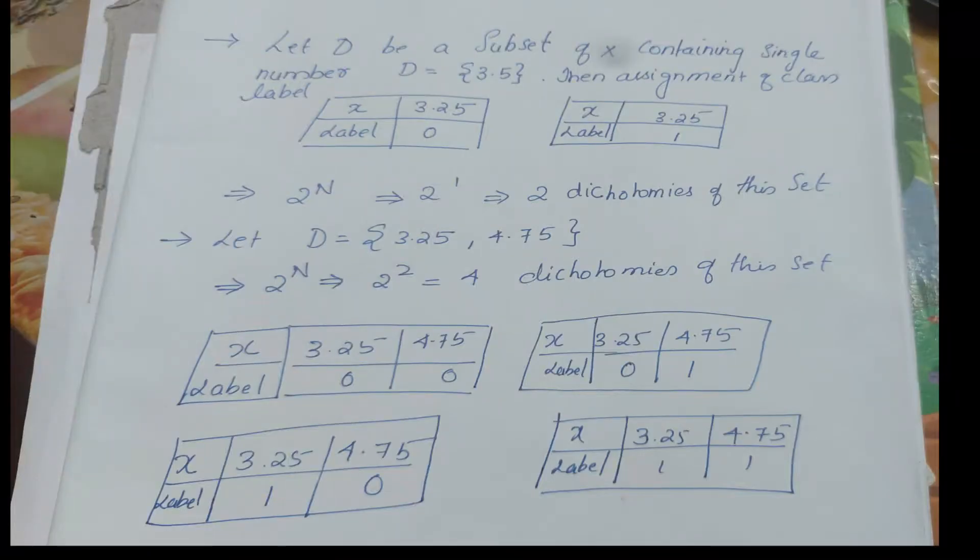So there will be always 2 raised to N dichotomy in D. Suppose D is equal to 3.25. What is this dichotomy? This dichotomy is 2 raised to 1. So label X is equal to 0, that's why we call it X is equal to 1. So there will be only 2 partitions for this.